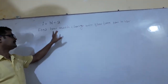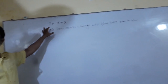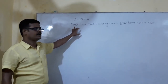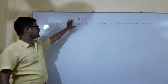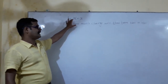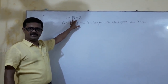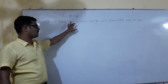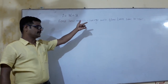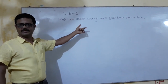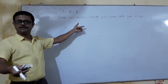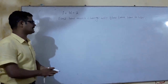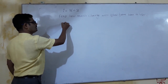In the first question, charge was given and we found the current. But here, electric current i is given as 3t plus 2. The question is: find how much charge will flow from 3 seconds to 4 seconds.